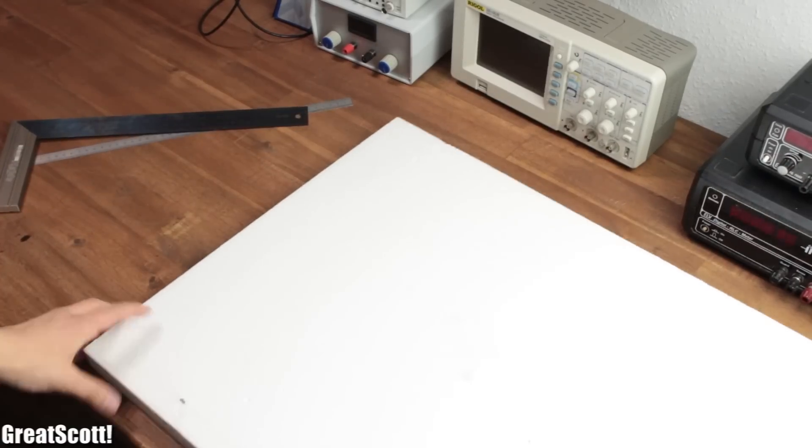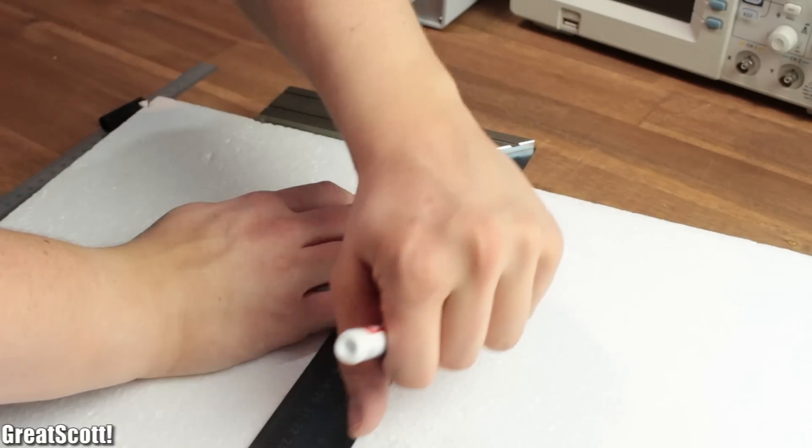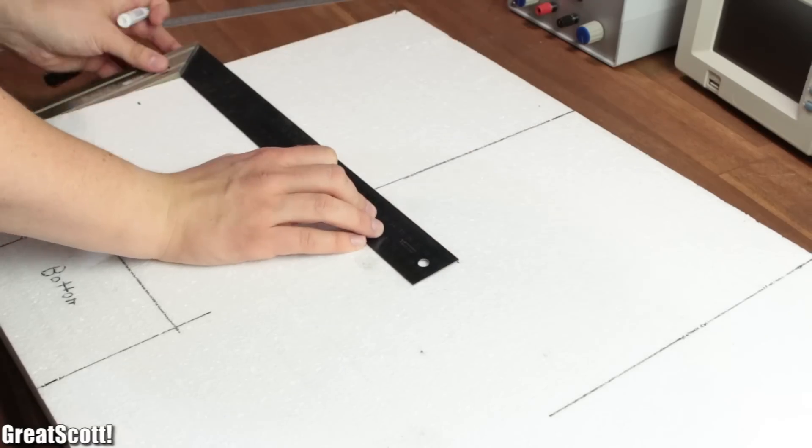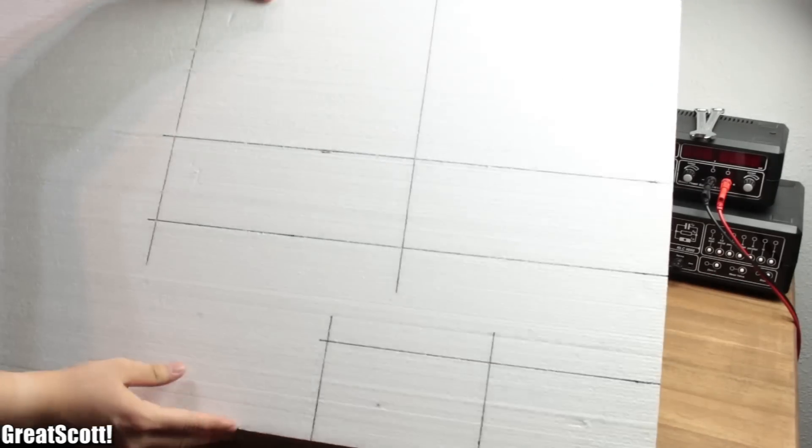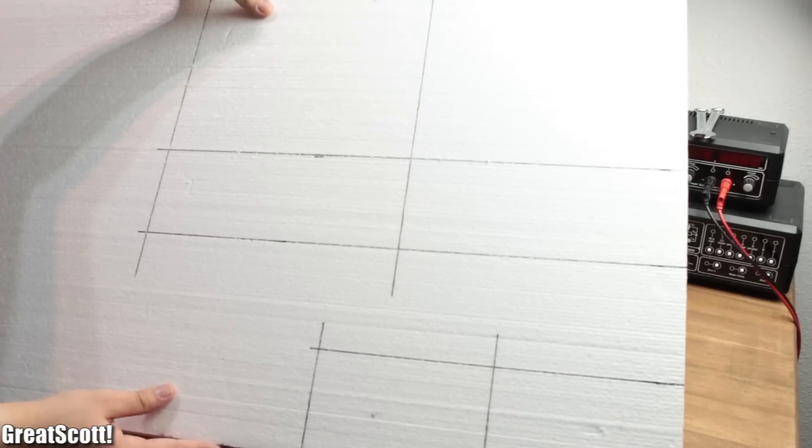Then I grabbed my overkill styrofoam and marked the middle layer parts onto both sides this time. Trust me, it'll make things easier in a minute.